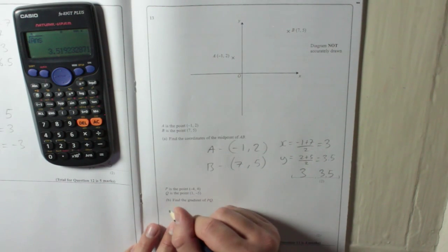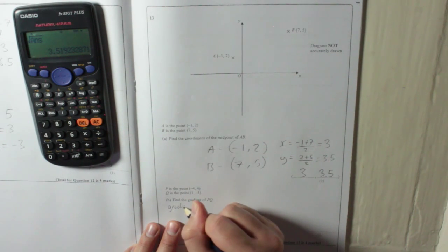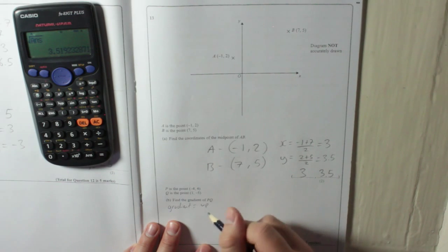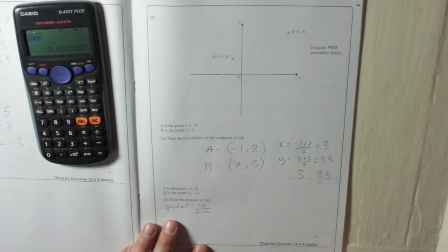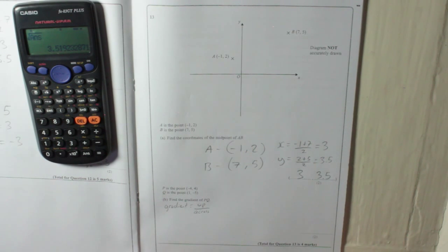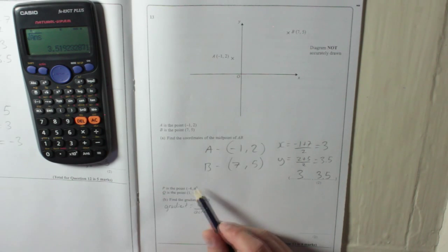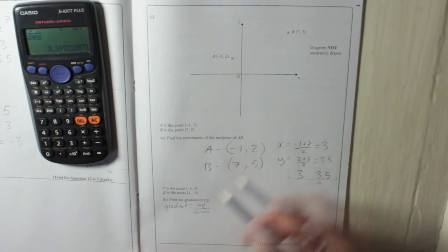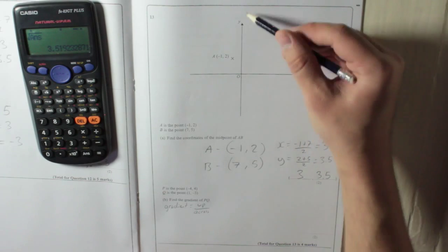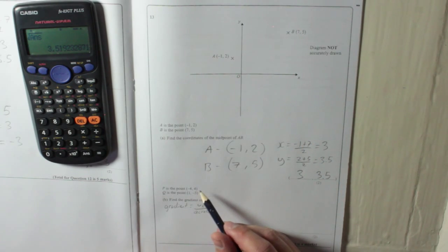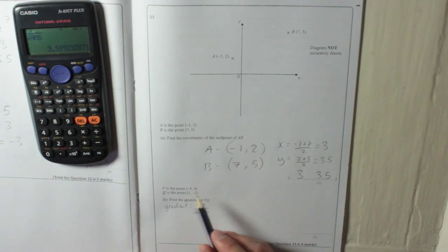Now, the thing to remember is that gradient is how far up something goes divided by how far across something goes. Now remember that the up part of the coordinates is the y, because it's the y-axis that goes up and down. So we can find out how far up it's gone by checking the distance between 4 and minus 5. And across, it's going across from minus 4 to 1.